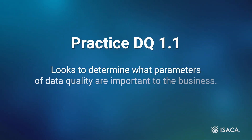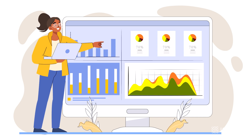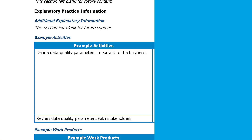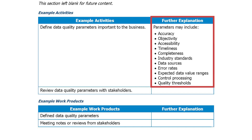Practice DQ 1.1 looks to determine what parameters of data quality are important to the business. This is obviously affected by the nature of the work and what needs to be achieved. If our actions are time sensitive, then the accuracy and availability of data may be the most important parameters. Look at the example activities in DQ 1.1 — there you will see an initial list of potential parameters to consider, but remember this is not necessarily an exhaustive list.